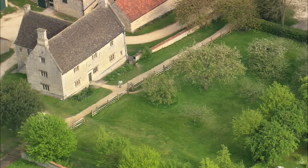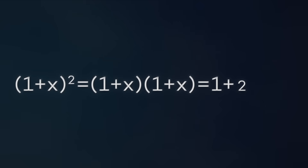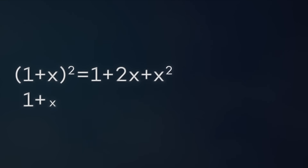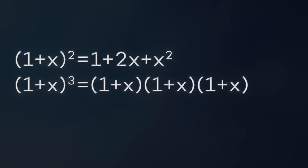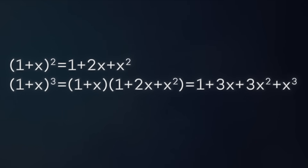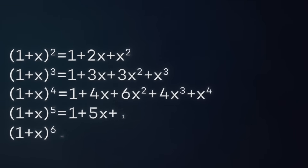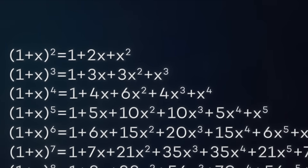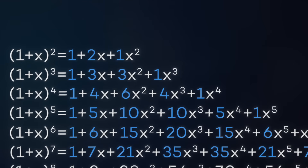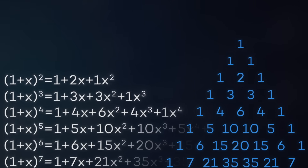Newton was playing around with simple expressions like (1+x)². You can multiply it out and get 1 + 2x + x². Or (1+x)³ gives 1 + 3x + 3x² + x³. You could do the same for (1+x)⁴ or (1+x)⁵ and so on. But Newton knew there was a pattern that allowed him to skip all the tedious arithmetic and go straight to the answer. The coefficients on x, x², and so on are actually the numbers in Pascal's triangle.